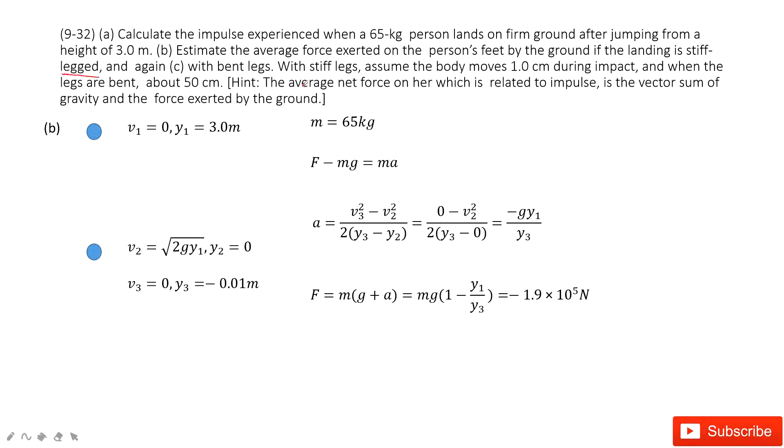So that means stiff-legged, it tells us it just changes 1 cm during the impact. So stiff-legged legs, it changes 1.0 cm. So y3 is negative 0.01 m. Can you find the average force?